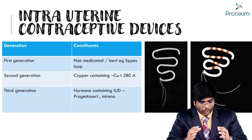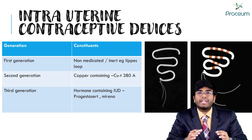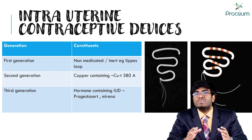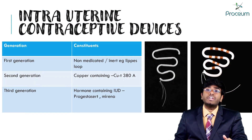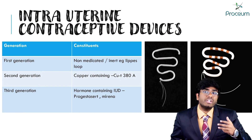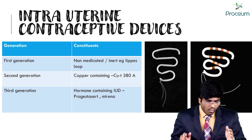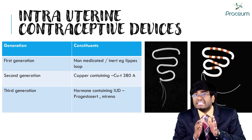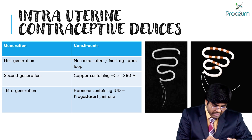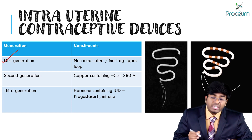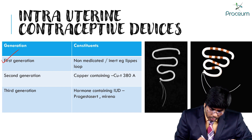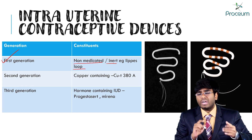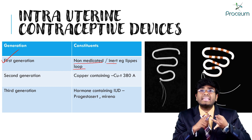Let's continue with the topic of intrauterine contraceptive devices (IUCDs). These are classified into three generations: first generation, second generation, and third generation. First generation IUCDs are non-medicated or inert substances — they do not contain any drug or metal.